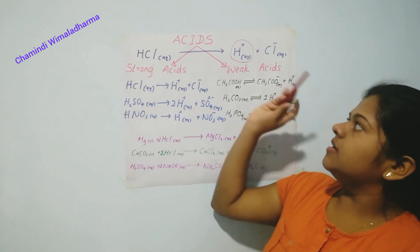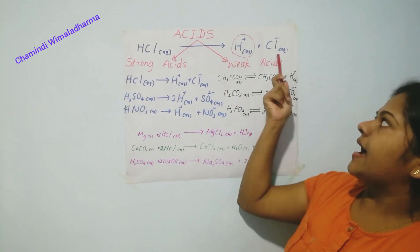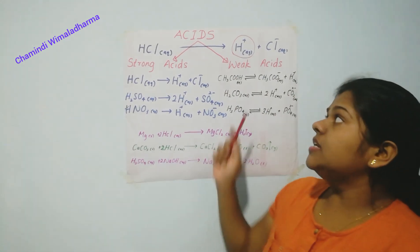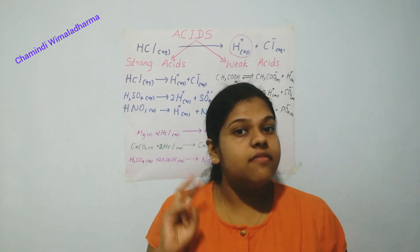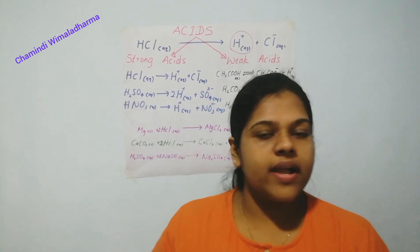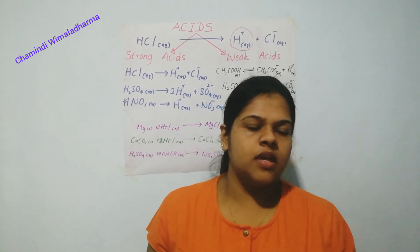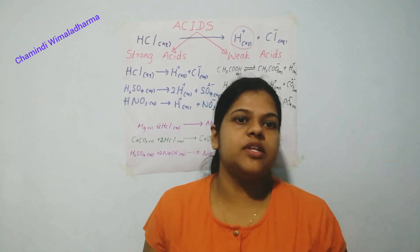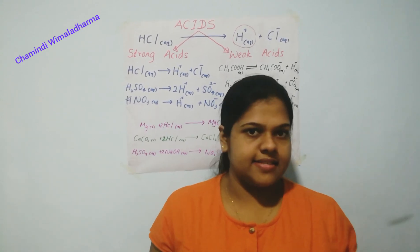Basically, you know that acids can be mainly divided into two groups: strong acids and weak acids. Now we will see what is the difference between a strong acid and a weak acid.